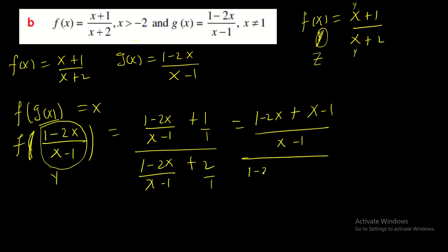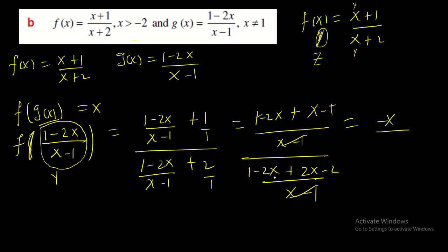The (x - 1) factors cancel. In the numerator: 1 - 1 cancels and -2x + x = -x. In the denominator: -2x + 2x cancels and 1 - 2 = -1. The negatives cancel, leaving x. So f(g(x)) = x.